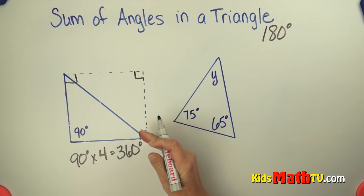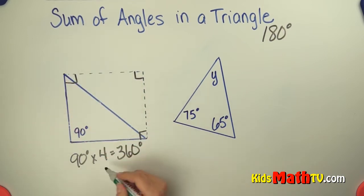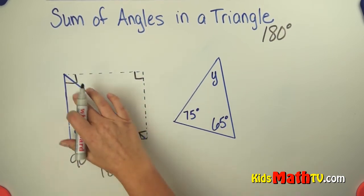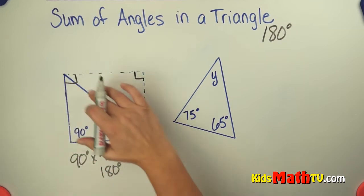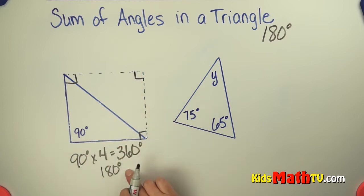If we cut that in half to make our triangle, we get 180 degrees. So this triangle, the total of the angles is 180 degrees.